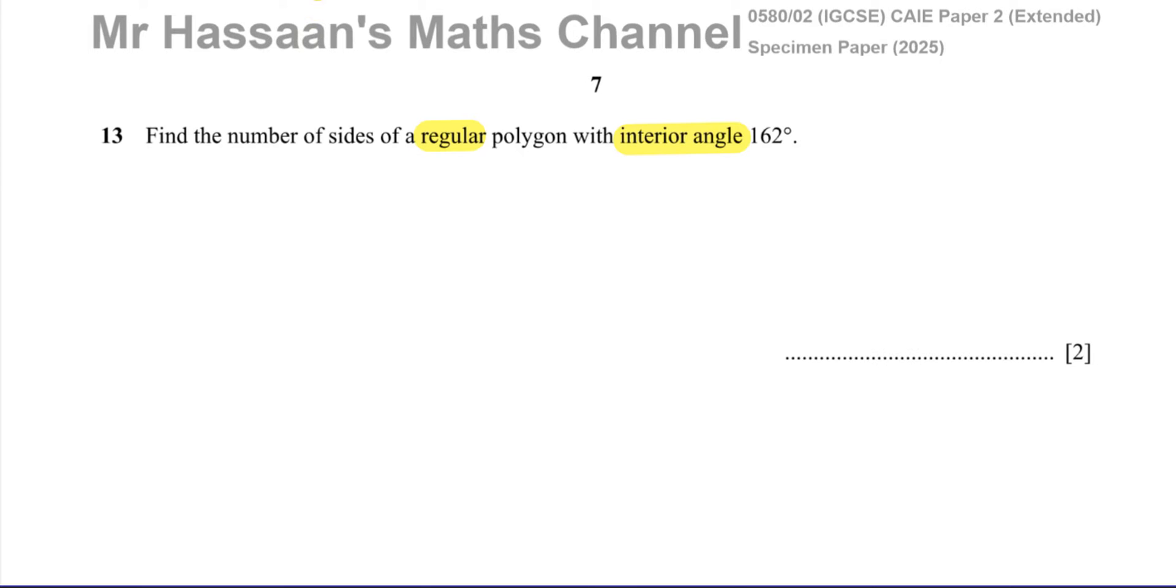So in this question we're talking about polygons. Now a polygon is a flat shape which is enclosed by straight lines. The smallest polygon you can have is a triangle and you can have quadrilaterals, pentagons, hexagons and so on.